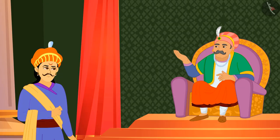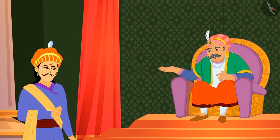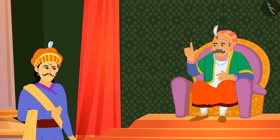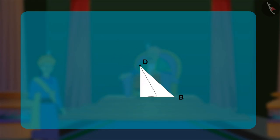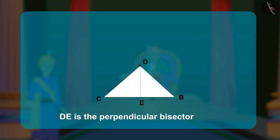How can you say that point D is the midpoint of a right triangle, asked Akbar. Birbal folds the paper to prove that DE is the perpendicular bisector of CEB. All points on the perpendicular bisector are equidistant from the endpoints of the segment.